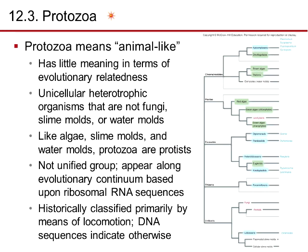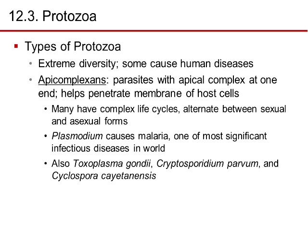Protozoa means 'animal-like.' They are unicellular, heterotrophic organisms that are not fungi, slime molds, or water molds. Like algae, slime molds, and water molds, protozoa are protists. They are not a unified group — they appear along an evolutionary continuum based on ribosomal RNA sequences. They are historically classified primarily by means of locomotion, though DNA sequences indicate different relationships. Their taxonomy varies depending on what you read.